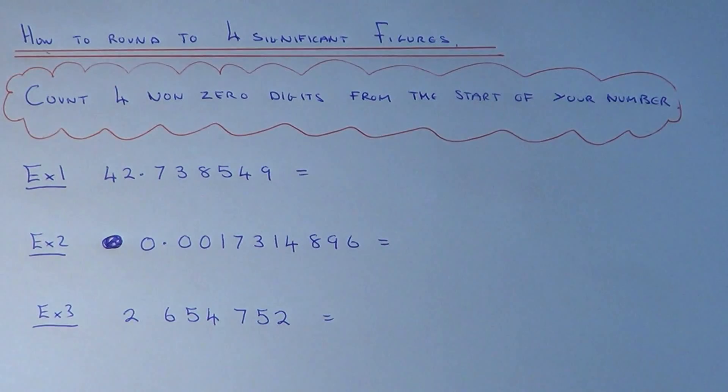Now I'm going to show you how to round any number off to four significant figures. To do this, you need to count four non-zero digits from the start of your number.